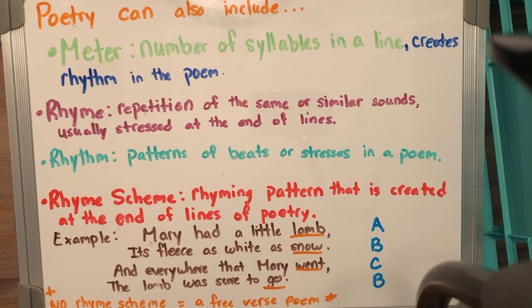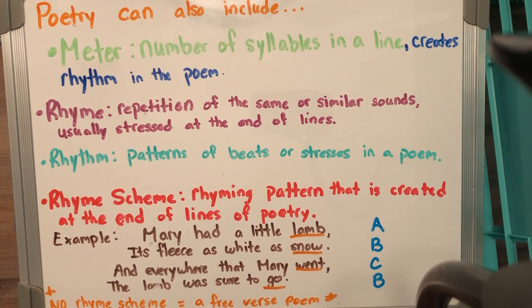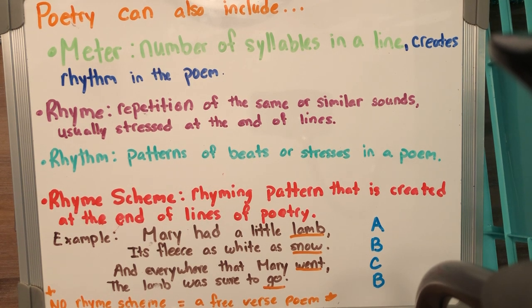Rhyme is the repetition of the same or similar sounds, and these are usually stressed at the end of the line. So this is your 'one fish, two fish, red fish, blue fish.' Dr. Seuss is really good at rhyme because his poetry is usually stressed at the end — fat, cat, hat, rat, here, there, what you could do in a box, what you could do with a mouse, fox, box — all those things.